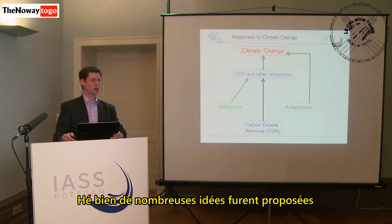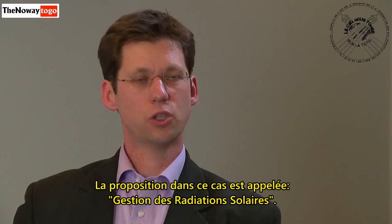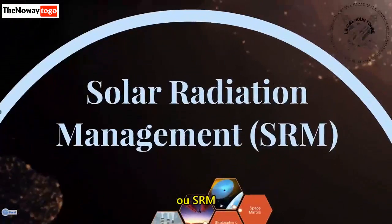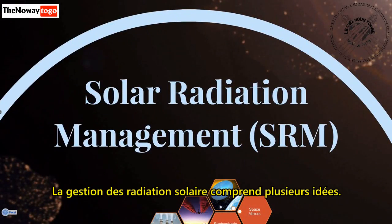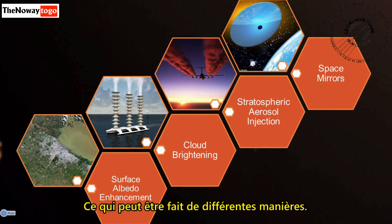Well, it turns out that a lot of ideas have been proposed for how to directly cool the climate. The jargon used for this is called solar radiation management, or SRM. Solar radiation management is a collection of ideas, most of them involving reflecting more sunlight back to space, and this could be done in different ways.